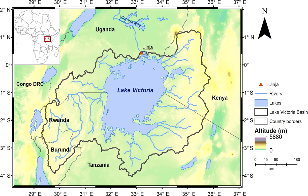In terms of volume, Lake Victoria is the ninth largest continental lake in the world, containing approximately 2,424 cubic kilometers of water. Lake Victoria occupies a shallow depression in Africa. The lake has an average depth of 40 meters and a maximum depth of 80 to 81 meters. Its watershed extends over 169,858 square kilometers.